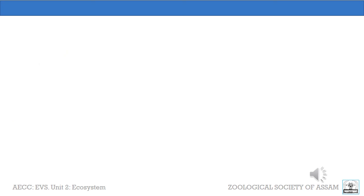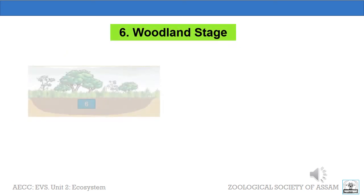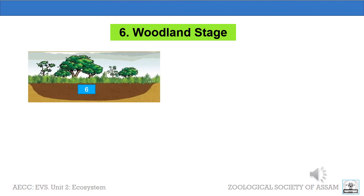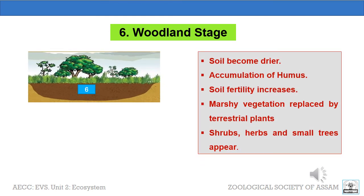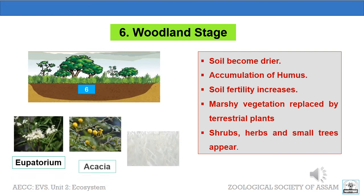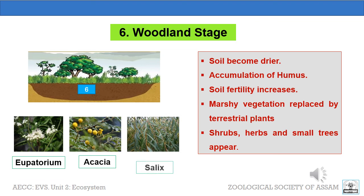The sixth stage of Hydrosere is the woodland stage. The soil becomes drier, and accumulation of humus increases the soil fertility. Marshy vegetation is replaced by terrestrial plants. Shrubs, herbs, and even small trees appear, like eupatorium, acacia, salix, etc.